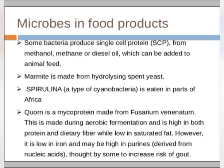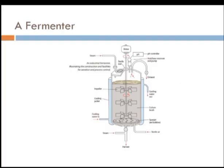Quorn is a mycoprotein made from the fungus Fusarium venenatum. It is produced during aerobic fermentation and is high in both protein and dietary fiber while low in saturated fat. However, it is low in iron and may be high in purines derived from nucleic acids, which some believe increases the risk of gout.